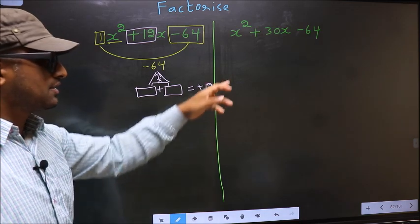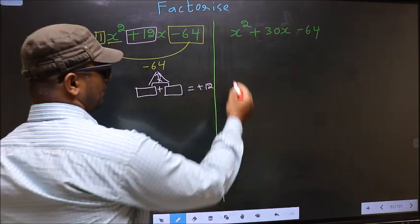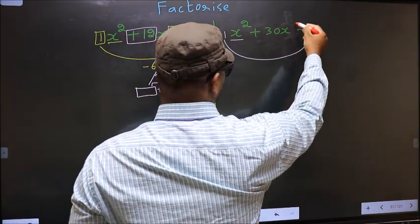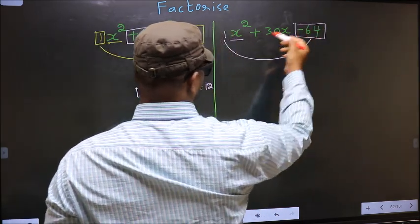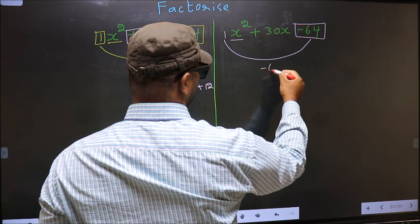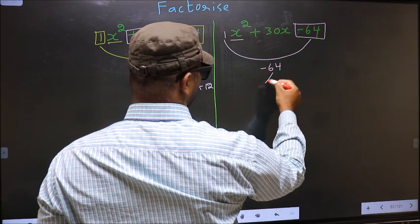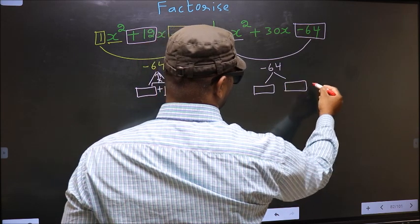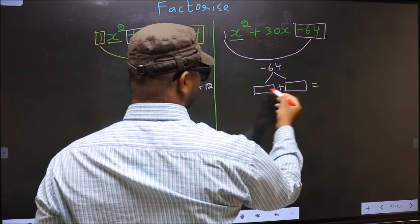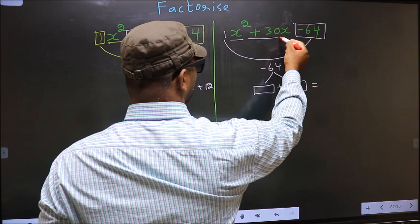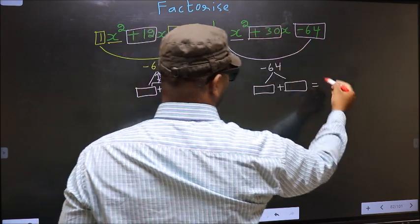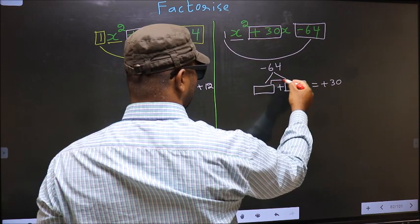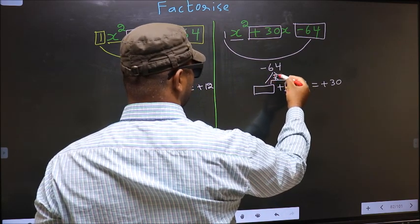Now same here. The x squared coefficient 1 is multiplied to the constant minus 64, so 1 into minus 64 we get minus 64. Now look out for two numbers such that when you add them you get the middle coefficient plus 30, and also when multiplied you should get minus 64.